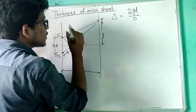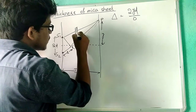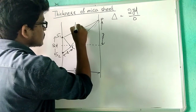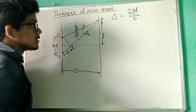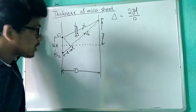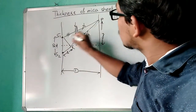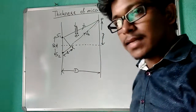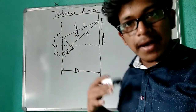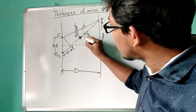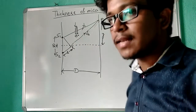So here, suppose I will keep a mica sheet with thickness t. In the Young's double slit experiment, what we are doing — S1P was one light path, then S2P was another light path, and we simply subtract S1P from S2P to get the path difference. But what happened now — this S2P line is completely passing through air, but in the S1P region, there is a material having a refractive index.